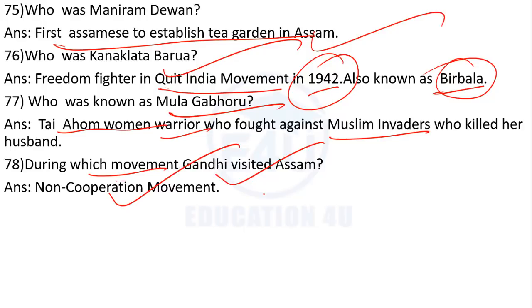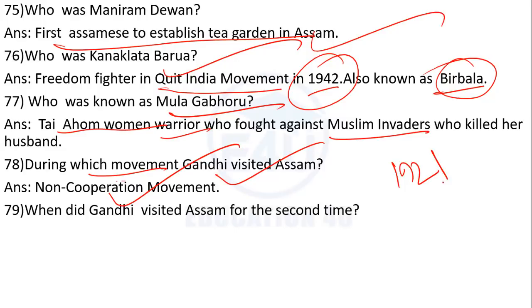Gandhi Ji's visits to Assam — the Non-Cooperation Movement. Gandhi Ji visited Assam first time in 1921 and the second time in 1926.